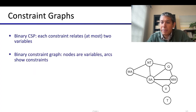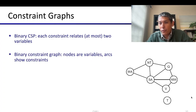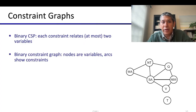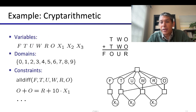To summarize: the constraint graph is used to articulate constraints. The simpler version with only variable nodes works well for binary constraints. The more general version uses circles for variables and squares for constraints, connected to all variables they span. If your problem has only binary constraints, you choose the simpler representation; otherwise, use the general form.